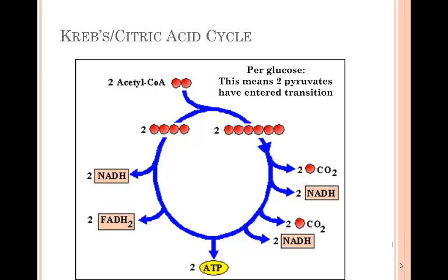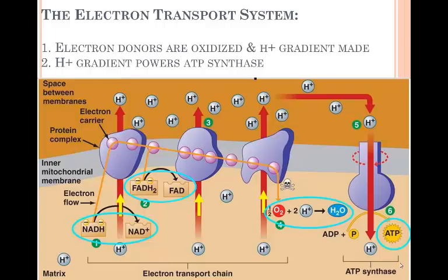The high-energy NADH and FADH2 are used in the electron transport system, ETS for short, located in the mitochondrial membrane. NADH and FADH2 serve as the electron donors to the electron transport system. The first stage of an ETS is to take an electron and pass it like a hot potato to other members of the ETS. The final electron acceptor is oxygen.